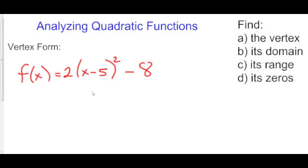Let's take a look at vertex form. Because this is called vertex form, the first thing it gives us is the vertex. So the vertex here is h, which here is 5, k, which is negative 8. So our vertex is at 5, negative 8.